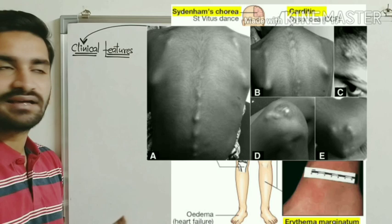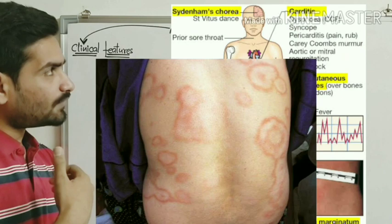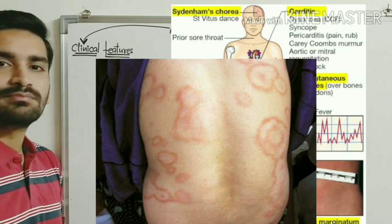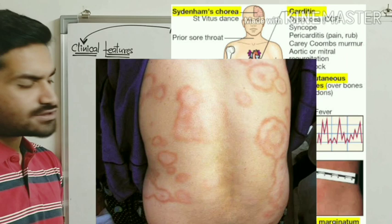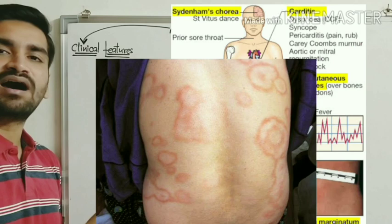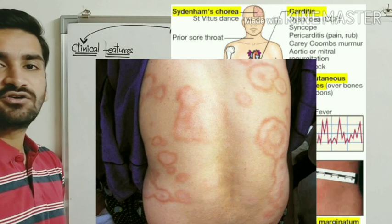Regarding erythema marginatum: the name itself tells us — erythema means red color, marginatum means margin. A red macule develops, and the central portion of the macule fades away as the disease progresses. Only the red margin remains, which is called erythema marginatum.